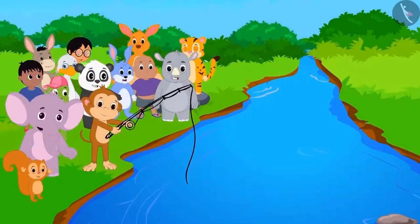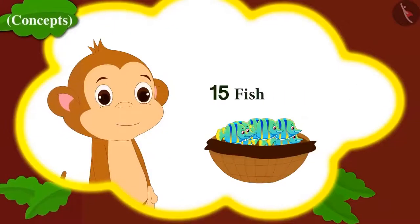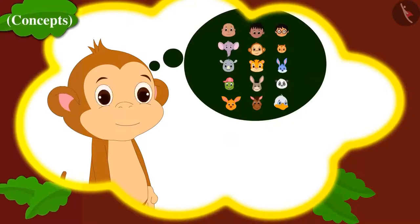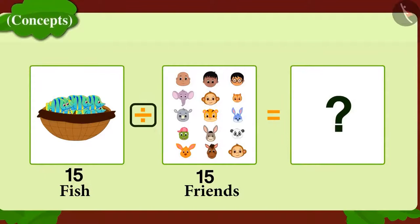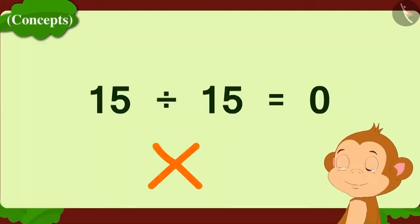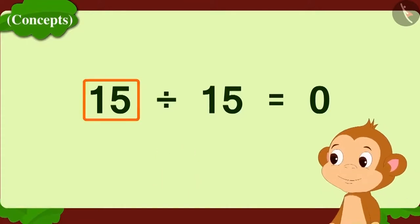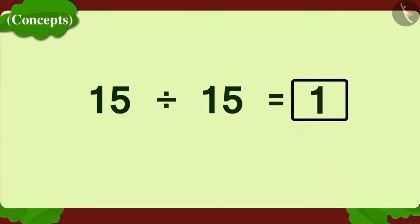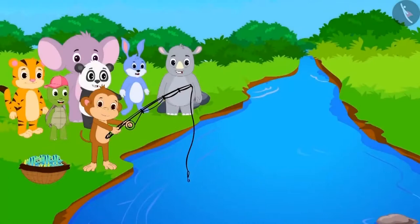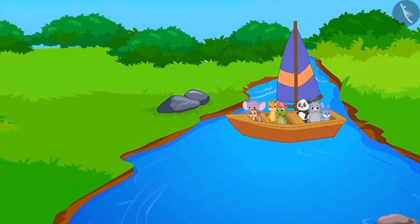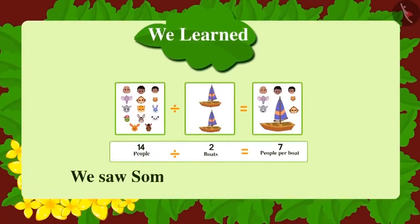Babban caught 15 fish and wants to divide them equally among 15 of his friends. He wrote a division — but has Babban written it correctly? Babban has written it wrong. Whenever we divide a number by itself, the answer will always be 1, as every person will get one object each. All friends caught a lot of fish and happily went home. Children, in this lesson we saw a few concepts about division.